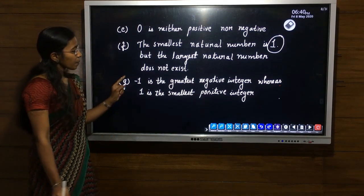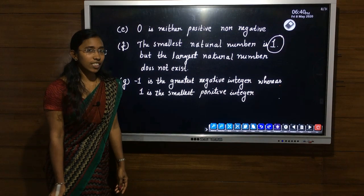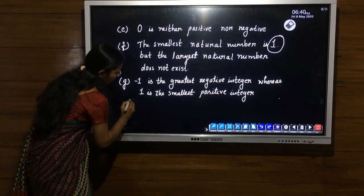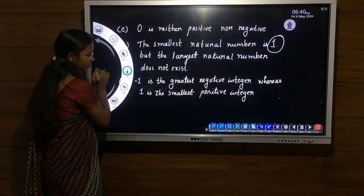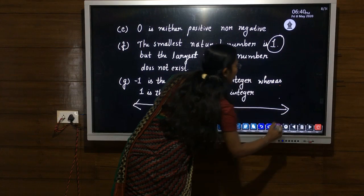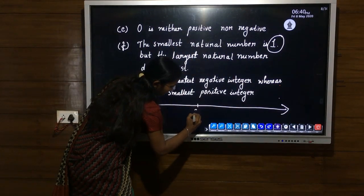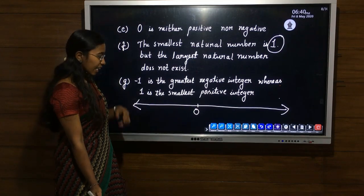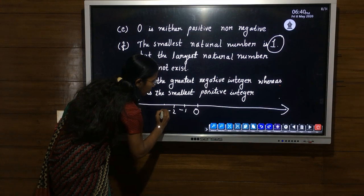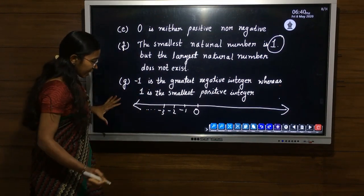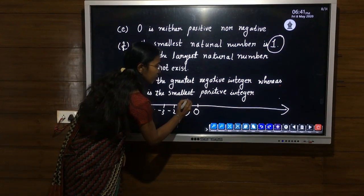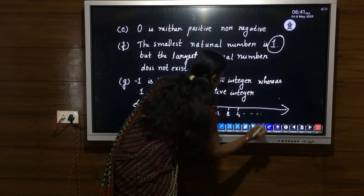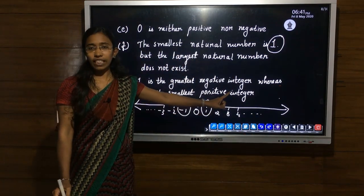Our last property: minus 1 is the greatest negative integer. Negative integers are minus 1, minus 2, minus 3, etc. going to minus infinity. On the number line, the right side of 0 is positive and the left side is negative: minus 1, minus 2, minus 3, minus 4, minus 5, and so on. Among all negative numbers, minus 1 is the greatest negative integer. And on the positive side, 1 is the smallest positive integer.